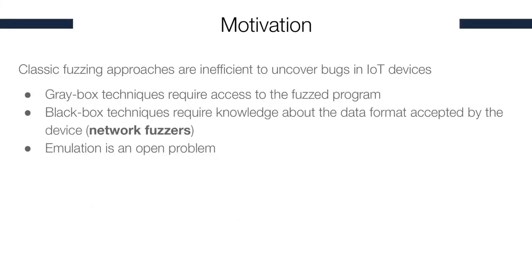IoT devices are inherently hard to fuzz using traditional methods. For instance, using gray box techniques is hard because it requires access to the fuzzer programs, which is hard for IoT devices because they're usually closed source and it's hard to get firmware from these devices. Similarly, black box techniques such as network fuzzers, although they help in generating data to these IoT devices, fail to generate data in the format expected by these devices. And finally, emulation of the firmware of these IoT devices is still an open problem.